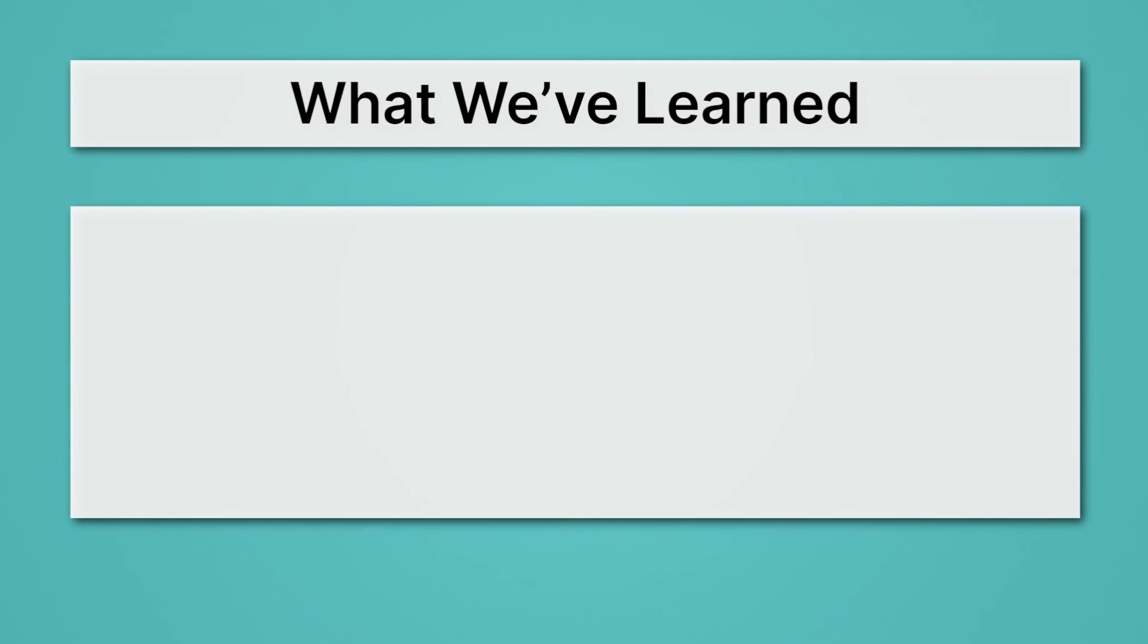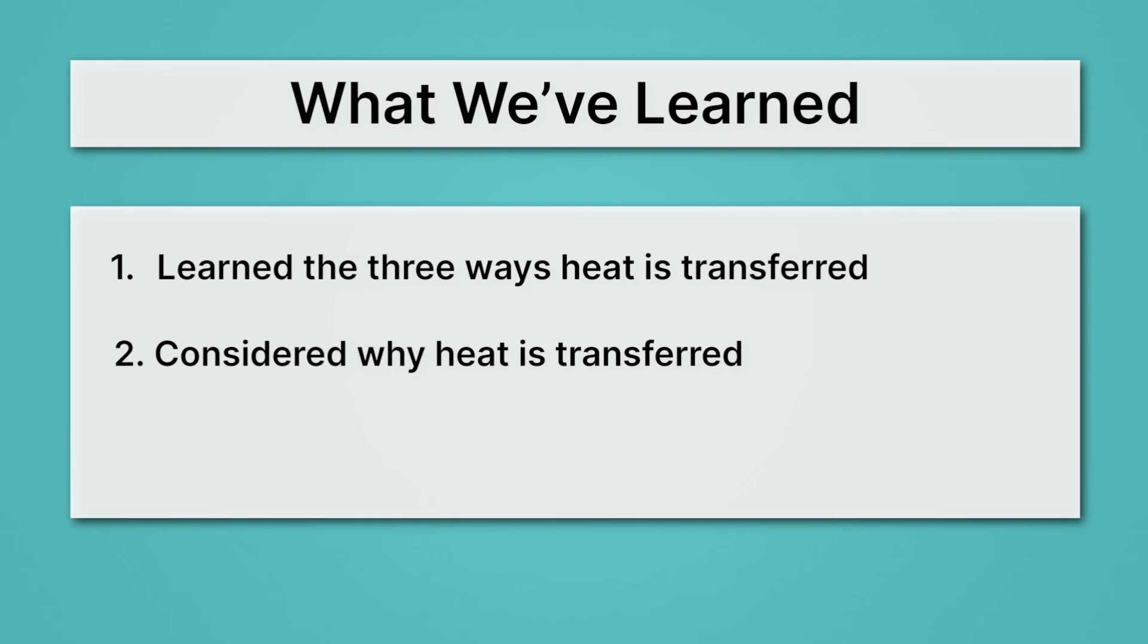Let's review what we've learned. First, we learned the three ways heat is transferred. We saw that heat could be transferred by conduction, that is, direct contact, or by radiation, which is through light, or lastly by convection, which is through the motion of currents. Then we considered why heat is transferred. There we learned that if you look at the subatomic picture of matter as heat is transferred, it's always going to move from hot to cold, because it's just simply the transfer of kinetic energy from those fast molecules, which are hot, to the cold molecules, which are moving quite slow. Then we learned to identify thermal equilibrium, which occurs when objects reach the same temperature.